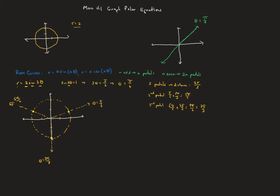To graph this, I start my pencil at the end of the first petal, then gaze across the circle 180 degrees and go counterclockwise to the end of the next petal, connecting them through the pole. Then from that petal endpoint, I gaze across 180 degrees again, go counterclockwise to the next petal, and connect through the pole. Repeating this process takes me back to the original petal, giving us our 3-petaled rose.